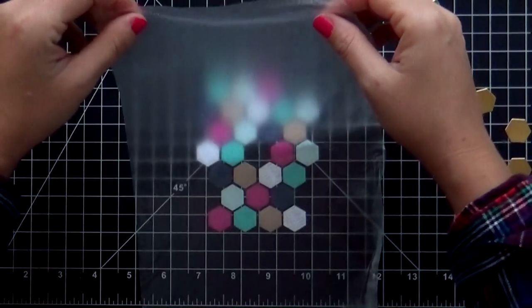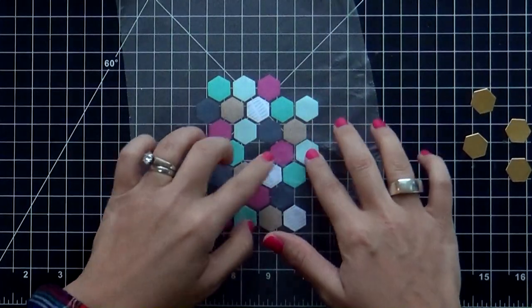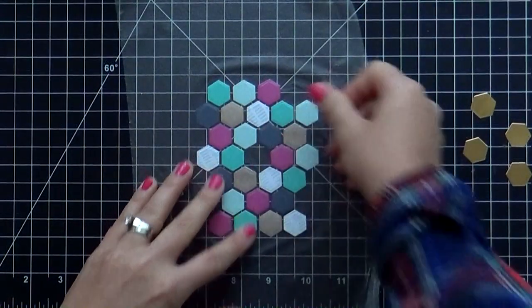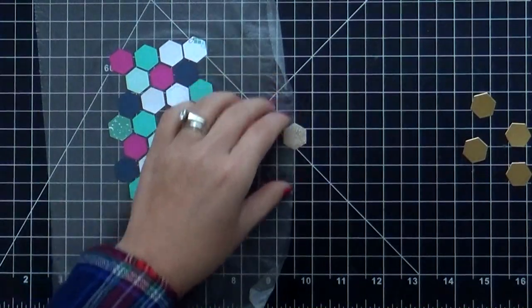And I realized that the press and seal kind of leaves a little bit of residue. You don't really notice it except for you do notice it on the foil cardstock kind of leaves like these little dots. So now I know that I removed the gold foil ones before I do the press and seal.